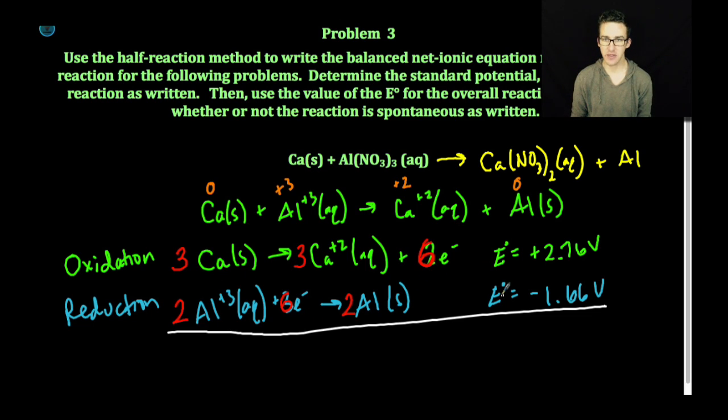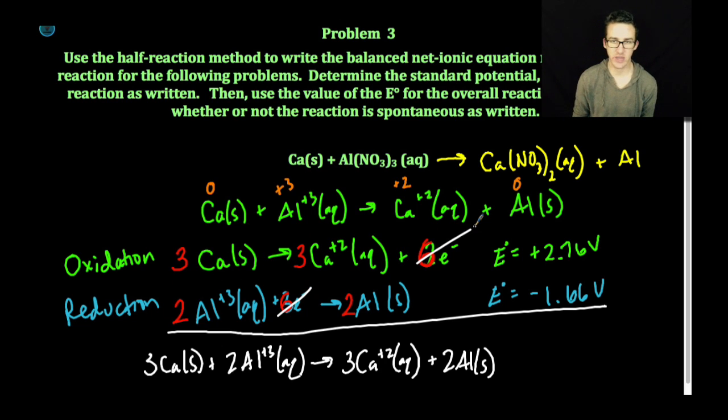Okay, I can now sum together my half reactions. Notice that my 6 moles of electrons will cancel out. And notice when I sum together the voltages of my oxidation half reaction and my reduction half reaction, I get an overall potential for this reaction of 1.10 volts. Again, because this sign is positive, this will be a spontaneous reaction as written. Boom, we are done.